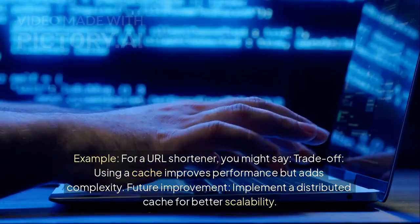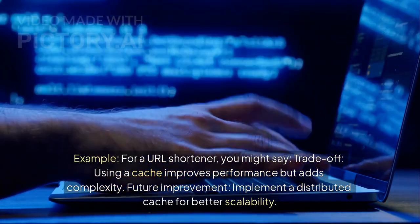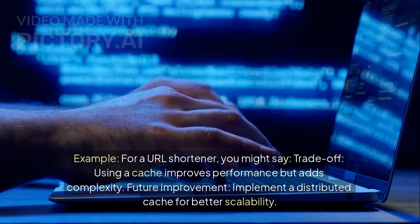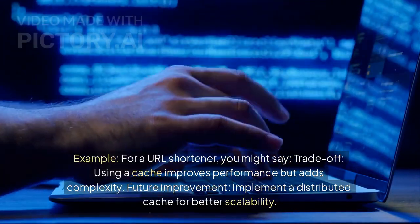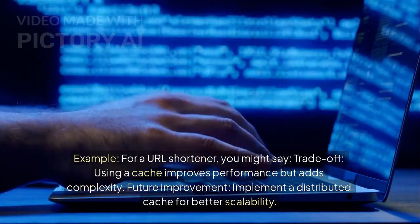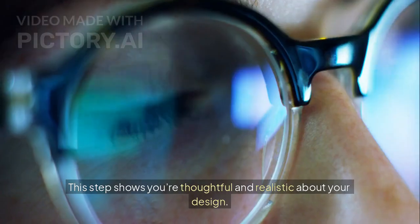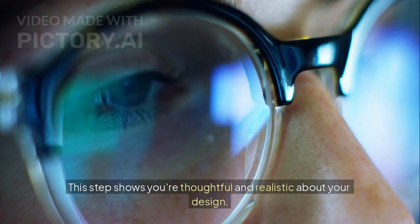For example, for a URL shortener, you might say: trade-off - using a cache improves performance but adds complexity. Future improvement - implement a distributed cache for better scalability. This step shows you're thoughtful and realistic about your design.